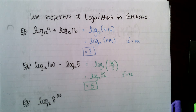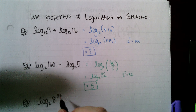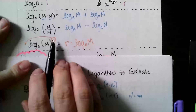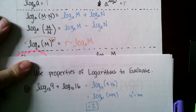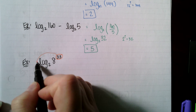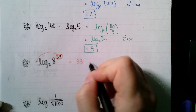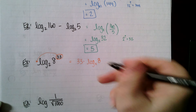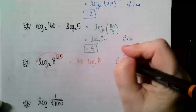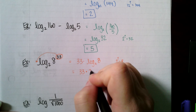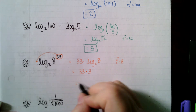Log base 2 of 8 to the 33rd — this uses the power property. I have a log with an argument raised to a power, so I bring that power to the front as a multiplier: 33 times log base 2 of 8. Log base 2 of 8 asks 2 to what power gives 8 — that's 3. So 33 times 3 gives 99.